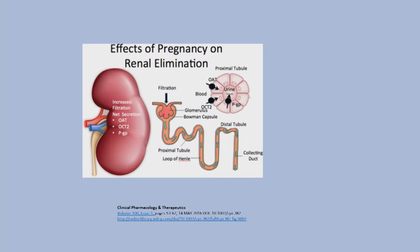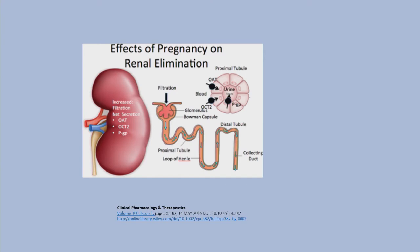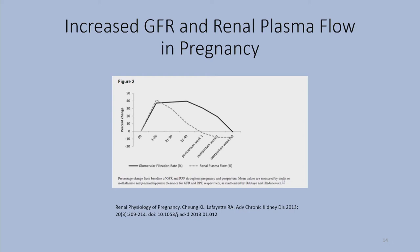There are also dramatic changes in renal function and renal elimination, with increased glomerular filtration in part because of increased cardiac output going to the kidney, and increases in the function of transporters actively moving drug from the circulation into the proximal tubule and into the urine. The percentage change in glomerular filtration rate and renal plasma flow increases dramatically very early in pregnancy and only returns to postpartum values about six to eight weeks after birth.